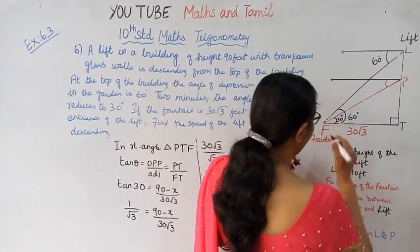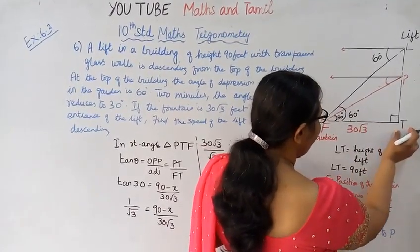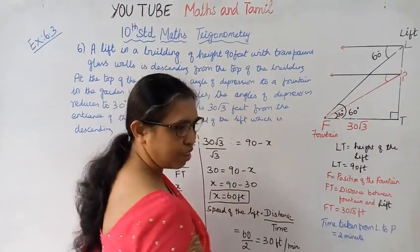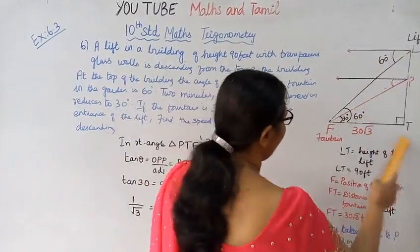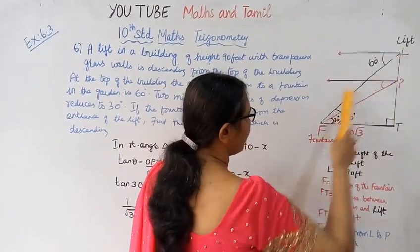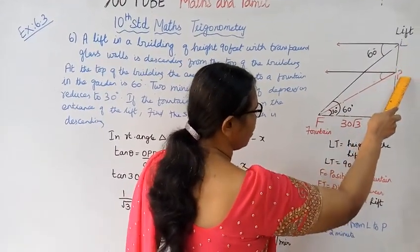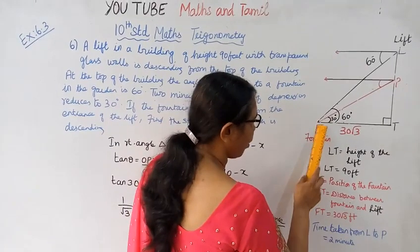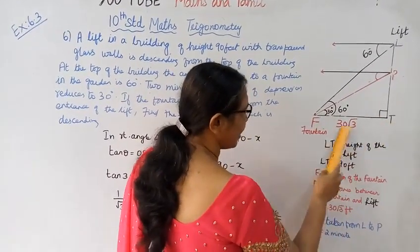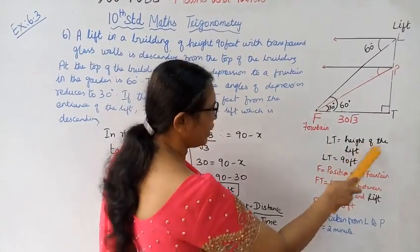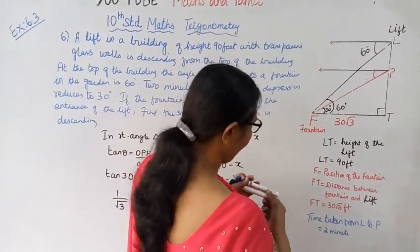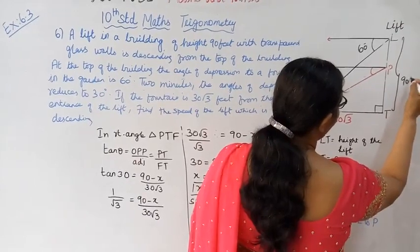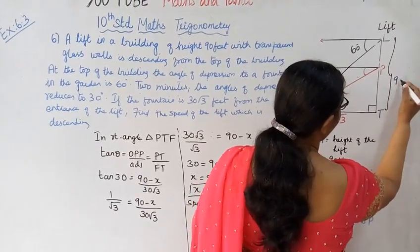The distance from the fountain to the lift at ground level is 30 root 3 feet. Let the height of the lift be LT. The total building height is 90 feet. Let the lift descend a distance of X.